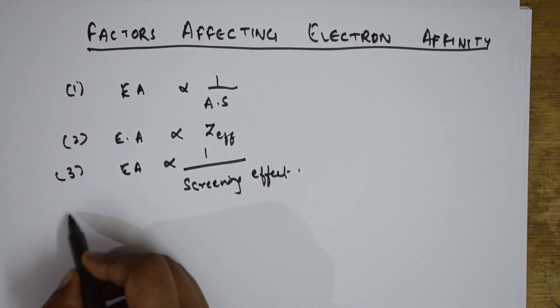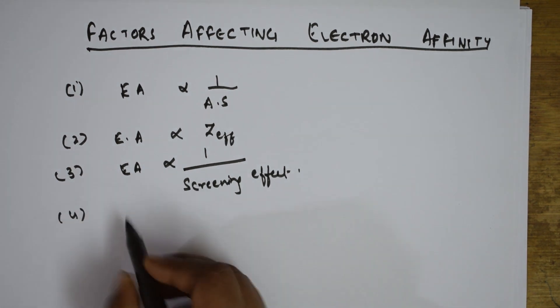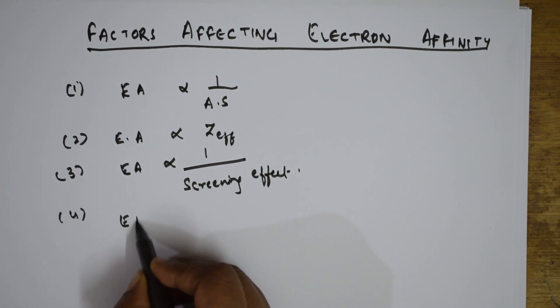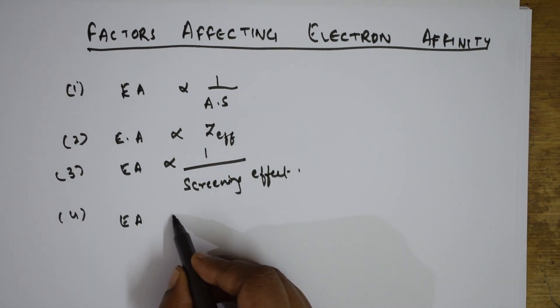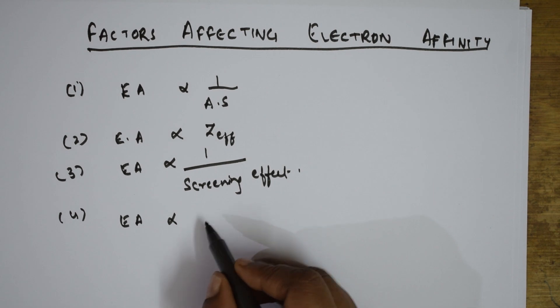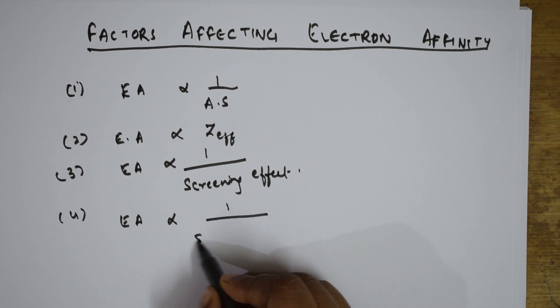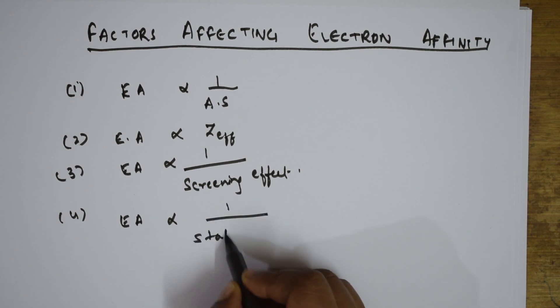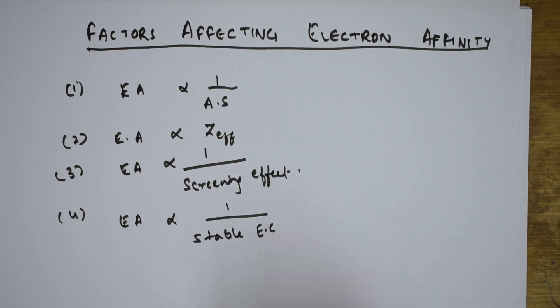Last but not the least, the fourth factor: electron affinity value is inversely related to stable electronic configuration.